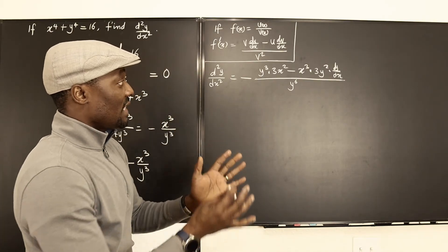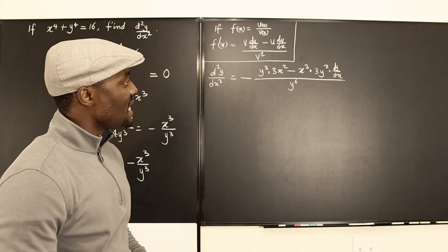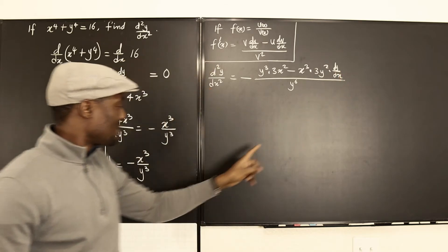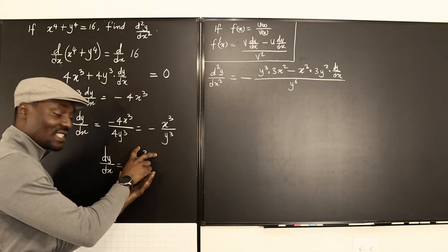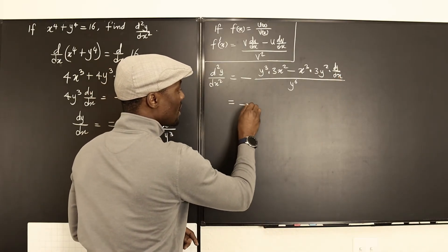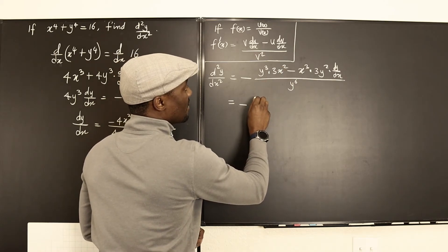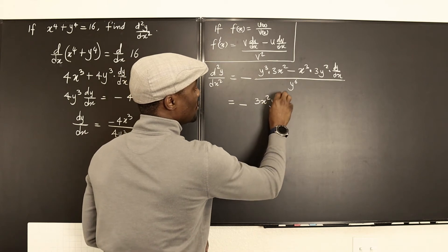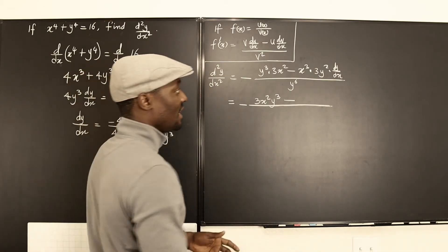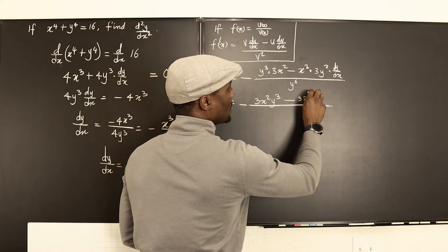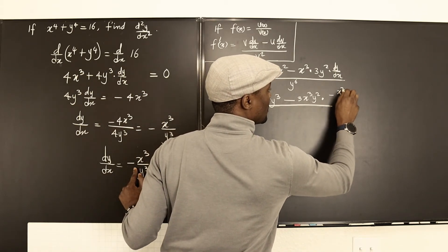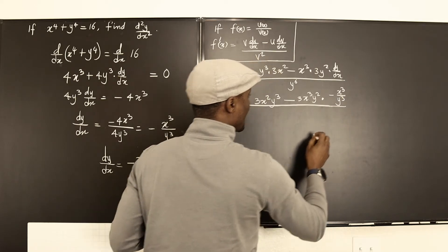Now we need to collect like terms. There's a dy/dx here, but we're not looking for dy/dx — we're looking for d²y/dx². So we take that entire term and substitute dy/dx equals negative x cubed over y cubed. This gives us: 3x squared y cubed, minus 3x cubed y squared multiplied by negative x cubed over y cubed, all divided by y to the sixth.